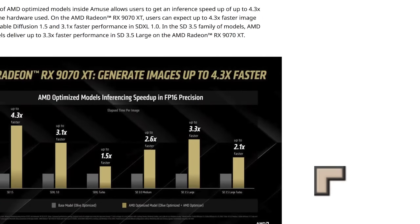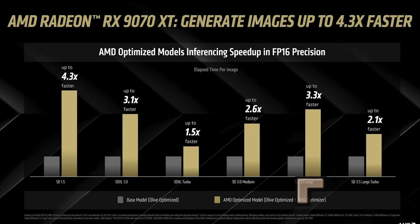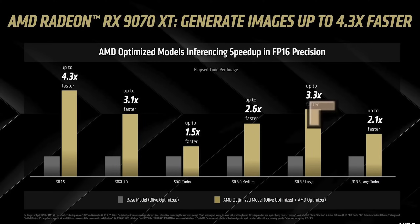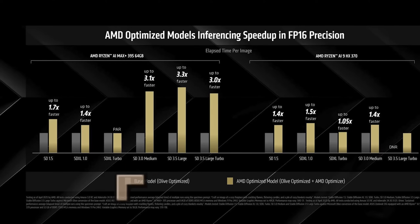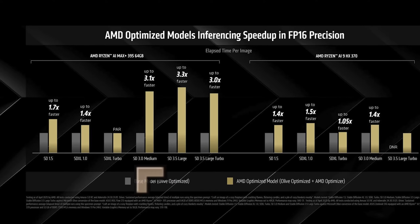Let's take a look at the performance. You can get massive performance boosts on Stable Diffusion 1.5 and SDXL 1.0, but you can also still get pretty decent improvements on SD 3.5 and also on SD 3.5 large turbo. There are other metrics as well for AMD optimized models — inferencing speed up in FP16 — which show incredible performance improvements in the latest models: three times faster in medium, large, and turbo. Not bad at all.